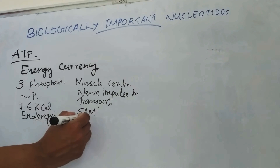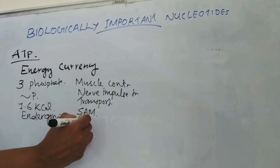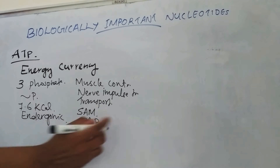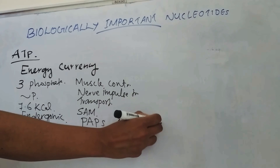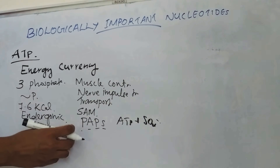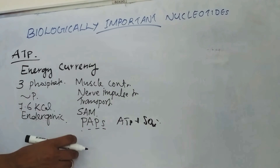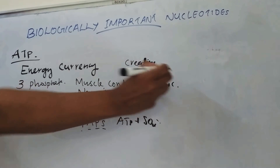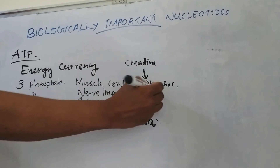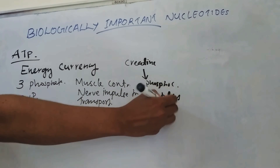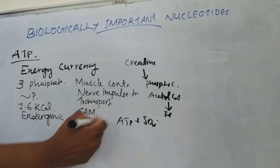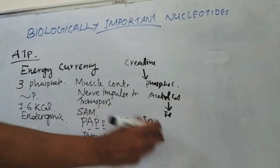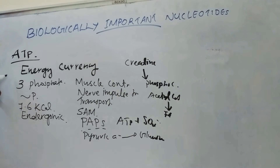ATP is required for the formation of active sulfate, that is phospho-adenosine phosphosulfate, which is formed from ATP and sulfate. ATP is also used for the synthesis of phosphocreatine from creatine, fatty acid from acetyl-CoA, and glucose from pyruvic acid. These are the main functions of ATP — it is the energy currency of the cell.